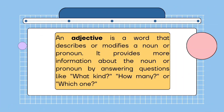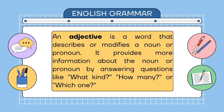Adjective. An adjective is a word that describes or modifies a noun or pronoun. It provides more information about the noun or pronoun by answering questions like what kind, how many, or which one.